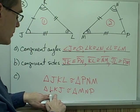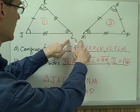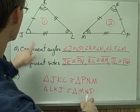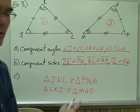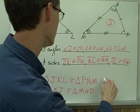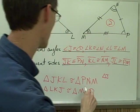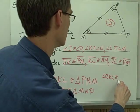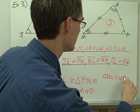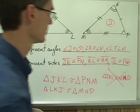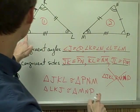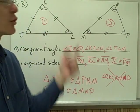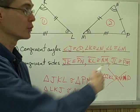Notice I could have also written this as triangle LKJ congruent to triangle MNP — this would also be a correct congruence statement because angle L and M are in the same position, angle K and N in the same position, and angle J and P in the same position. What would not be correct, for example, is triangle JKL congruent to triangle MNP — this is incorrect because angle J and angle M are not congruent, even though they're placed in the same position.